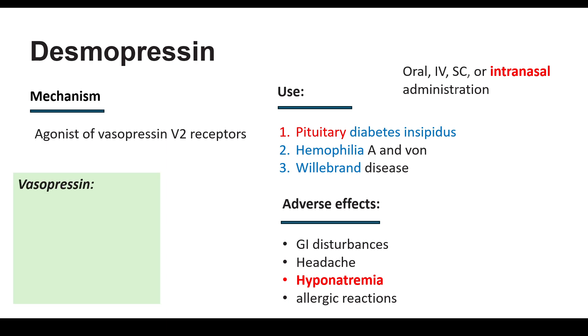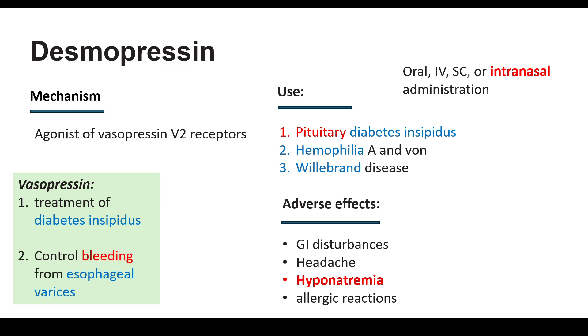Vasopressin is used in the treatment of two conditions mainly: diabetes insipidus, as well as to control bleeding in cases of esophageal varices.